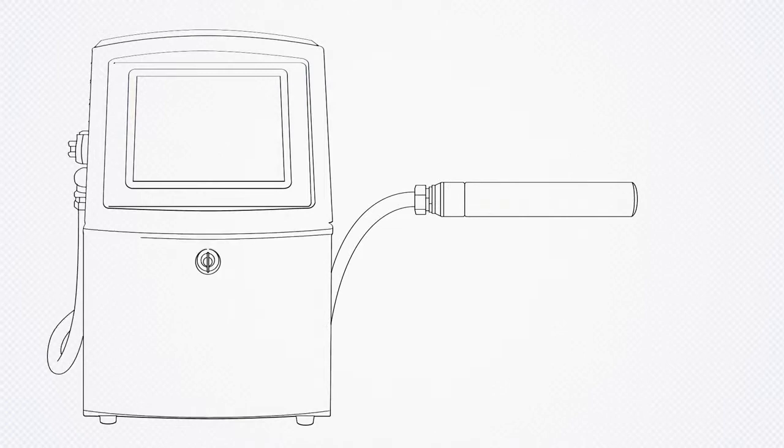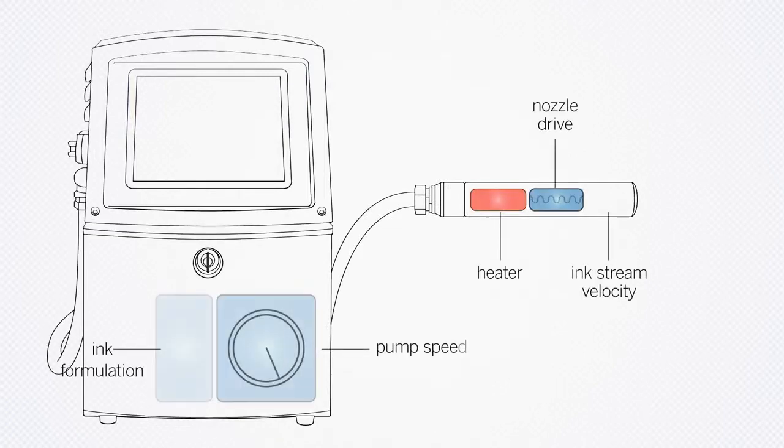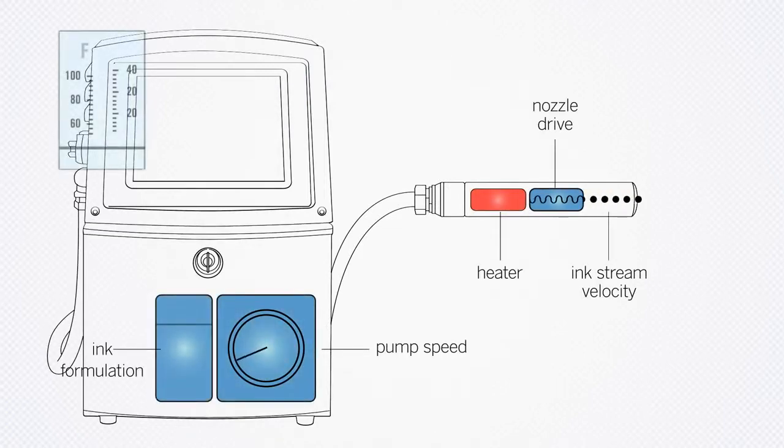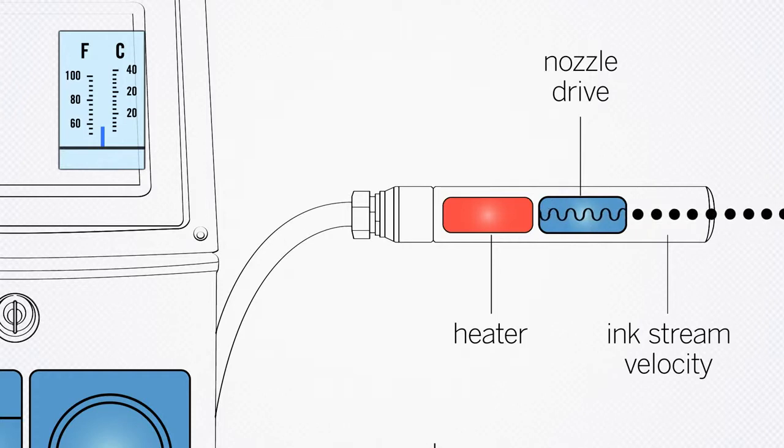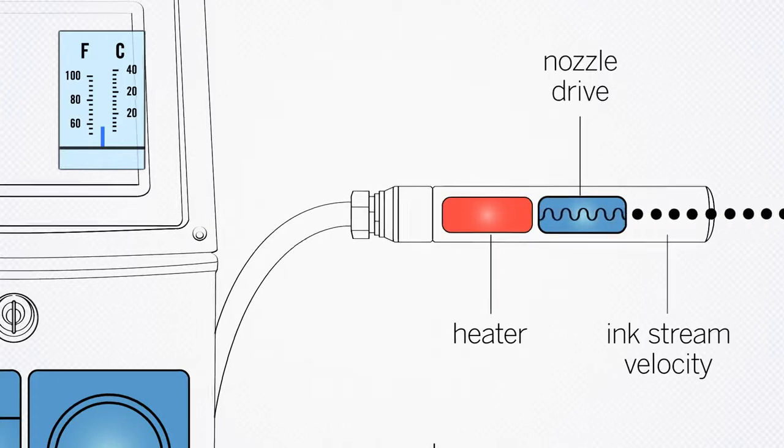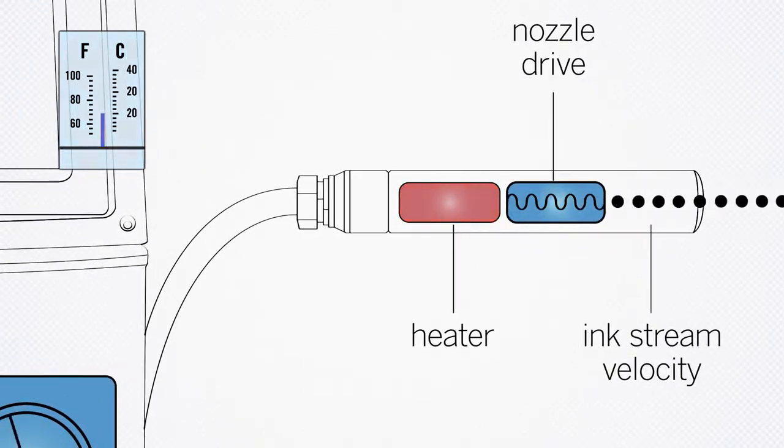The system maintains constant jet velocity, ink viscosity, and drop formation by dynamically controlling pump speed, nozzle drive, and printhead heater temperature. The printhead heater is designed to maintain constant ink temperature even when ambient temperature and humidity changes.